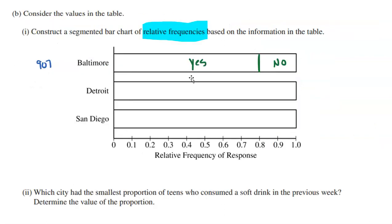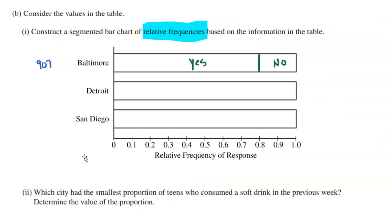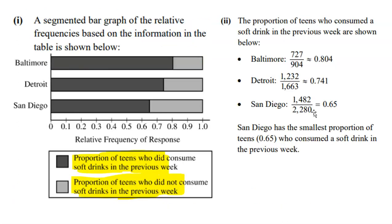Keep in mind you could write yes and no in the actual bars, or use shading with a key. Now there was a follow-up question asking which city had the smallest proportion of teens who consumed a soft drink, and what is the value of that proportion. Looking at the proportions from Baltimore, Detroit, and San Diego who said yes, we can conclude that San Diego had the smallest proportion at 65%. Pretty easy math, nothing too complicated.